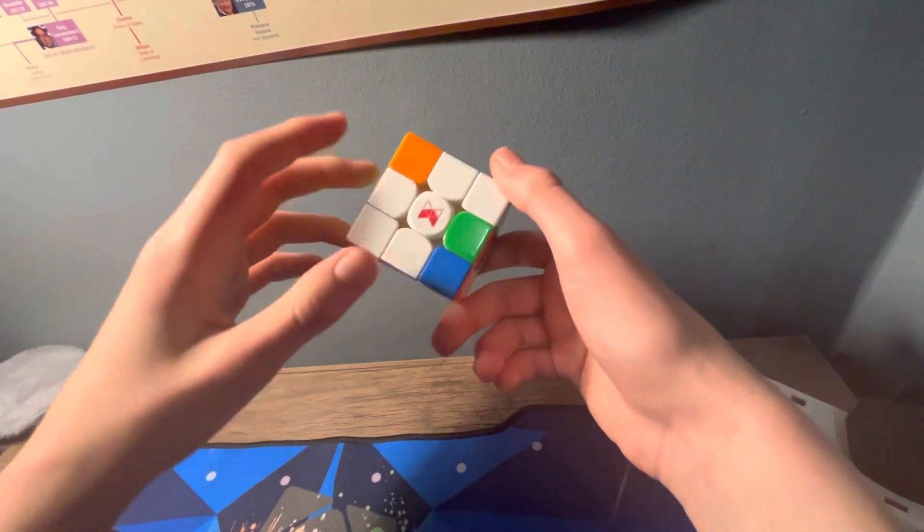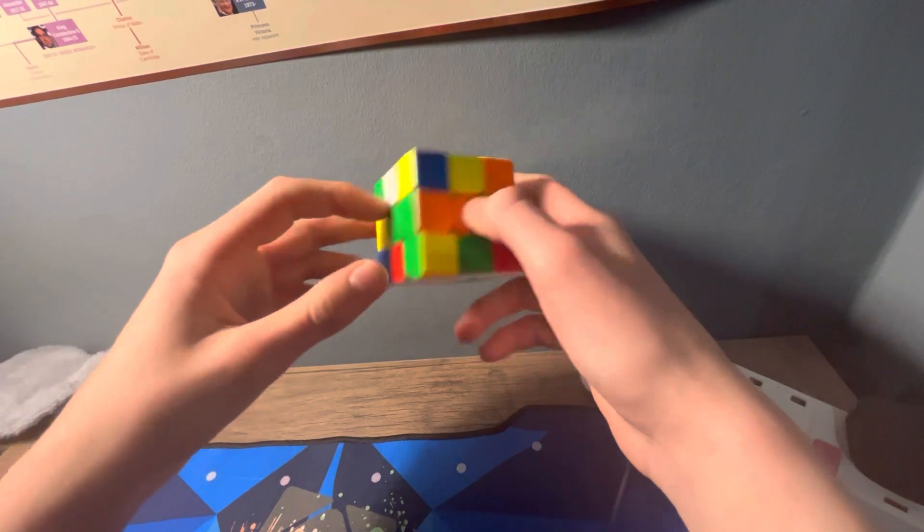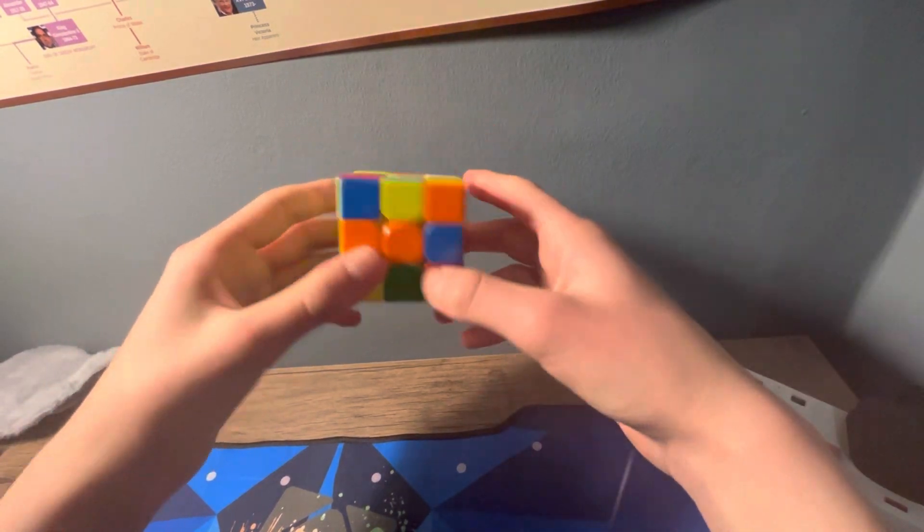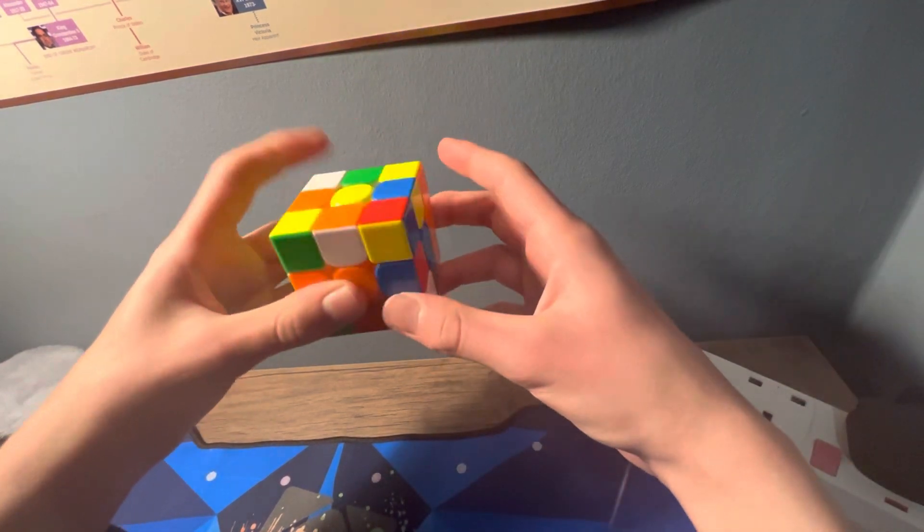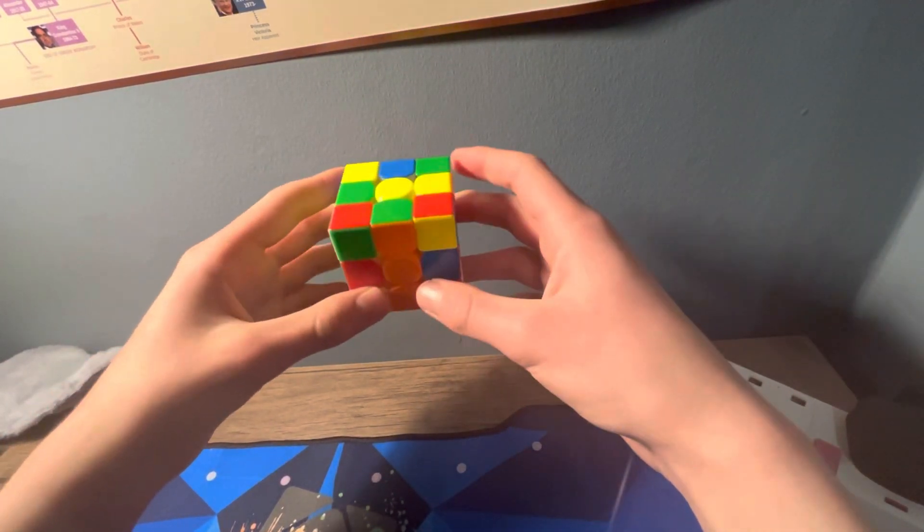Obviously this is very good for white cross because these two pieces, if I just do a D prime, they're all in the right place, which is lovely. And then I see that this white orange is the last piece that needs to be inserted. So I do a D prime and I just do that to insert the orange piece.